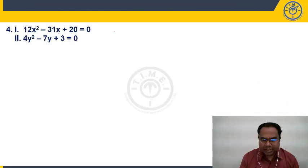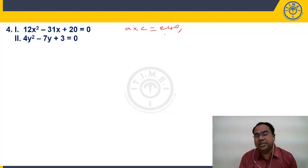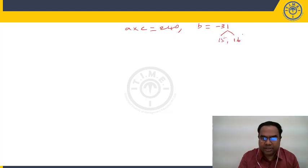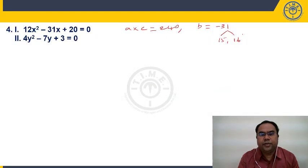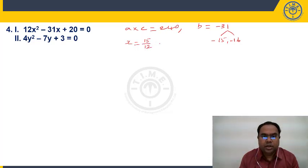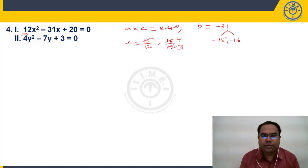Question 4: 12X² − 31X + 20 = 0. A×C = 12×20 = 240, B = −31. If you're solving simultaneously, please pause the video. A×C positive, write B as sum of two numbers: 15×16=240, 15+16=31. Since B = −31, take −15 and −16. Change signs: +15 divided by 12 = 5/4. +16 divided by 12 = 4/3. Roots of X: 5/4, 4/3.